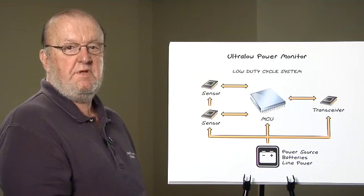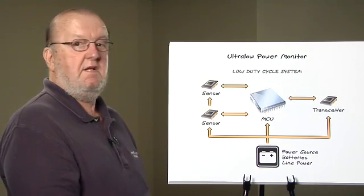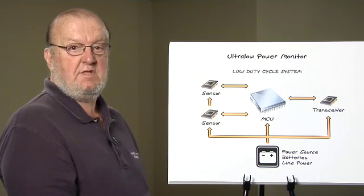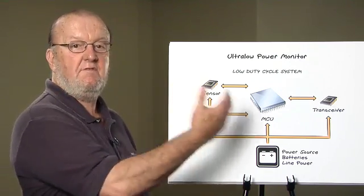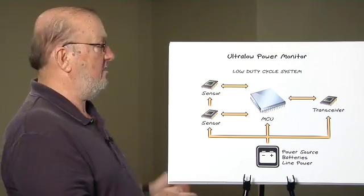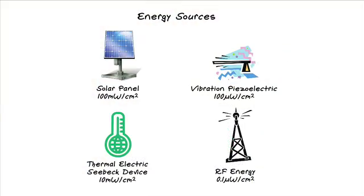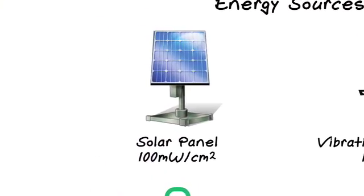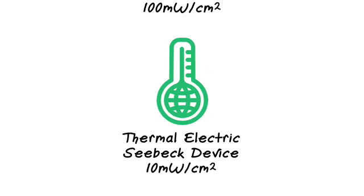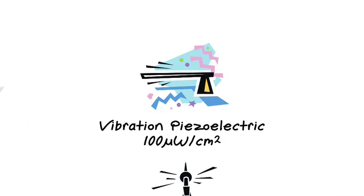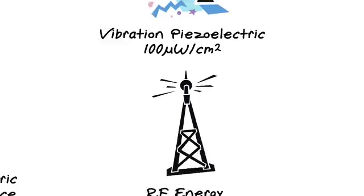The missing link is the energy harvesting system itself that takes this energy and converts it into usable power. An energy source could be from solar, a heat differential, vibration, or RF energy.